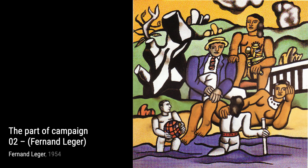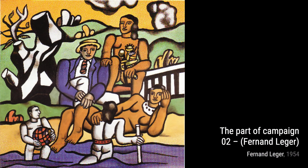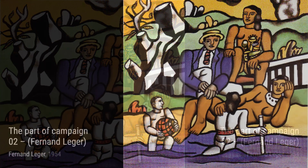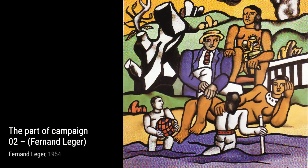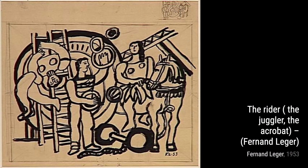Next, we have Manufacturers on a Blue Background. Léger's depiction of industrial workers is both powerful and thought-provoking. The bold lines and contrasting colors highlight the strength and resilience of the working class. The Flower That Walks is a whimsical and playful piece by Léger. The vibrant colors and abstract shapes give this painting a sense of joy and vitality.